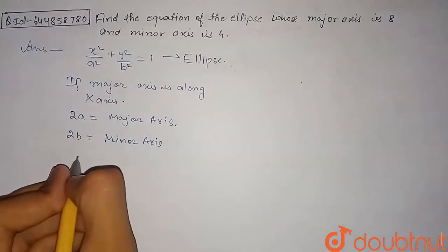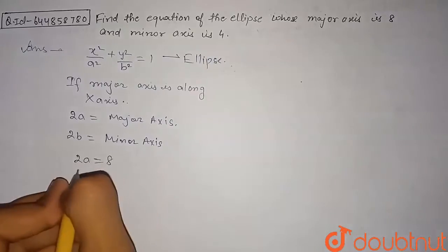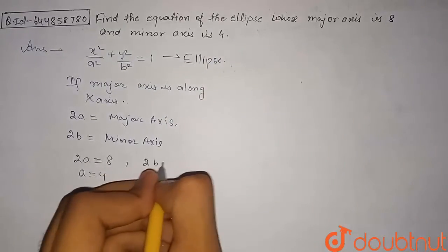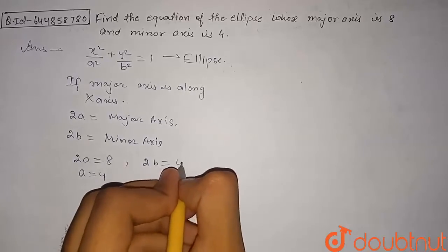Similarly, 2b will be equal to the minor axis, which is given as 4. So from here, b will be equal to 4/2, which equals 2.